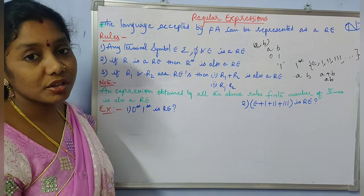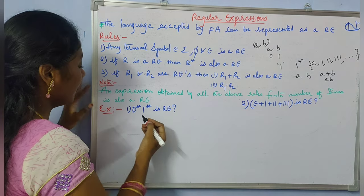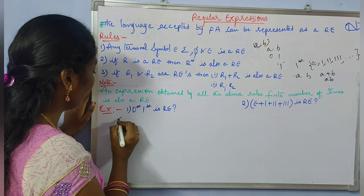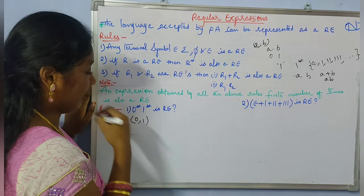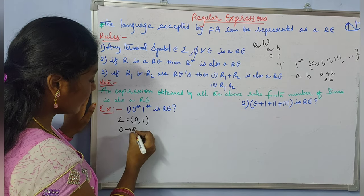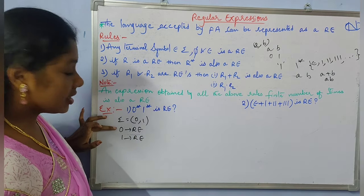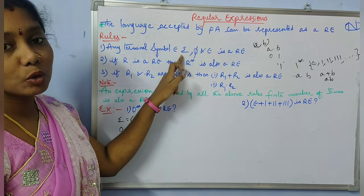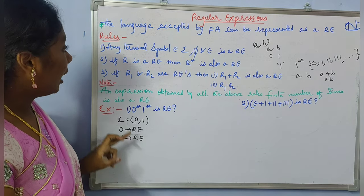Based on these rules, let us analyze whether a given expression is a regular expression or not. The first example is 0*1*. We need to find out whether this is a regular expression or not. Here, sigma = {0, 1}. I can say that 0 is a regular expression and 1 is a regular expression, because from rule 1, any terminal symbol belonging to sigma is a regular expression.